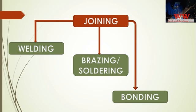The joining processes in general can be classified as welding, brazing and soldering, and bonding. In welding, the base metal is usually melted, while in brazing and soldering only the filler metal is melted and the base metal is not. Bonding is done with adhesive. There is a course for International Adhesive Engineer, similar to the International Welding Engineer.